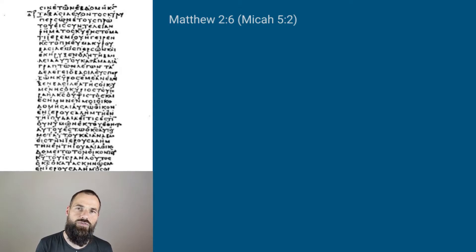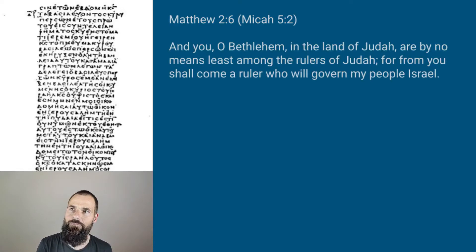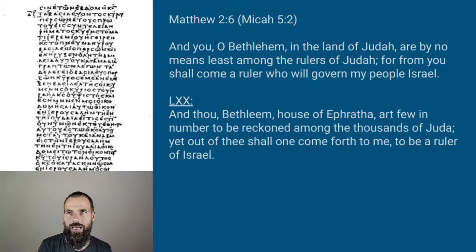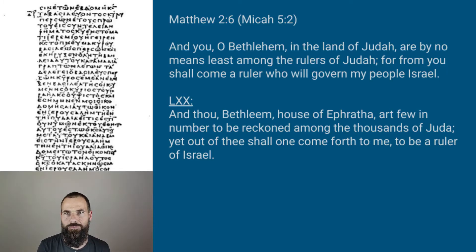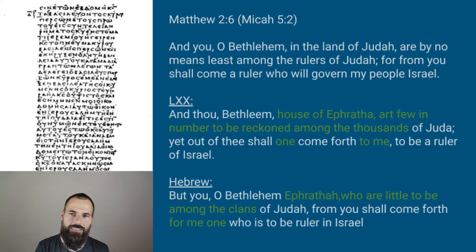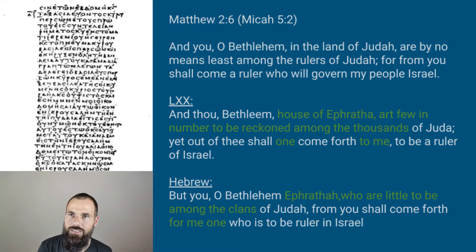Let's look at an example from Matthew 2:6, where Matthew undoubtedly quotes Micah 5:2. He says: 'And you, O Bethlehem, in the land of Judah, are by no means least among the rulers of Judah; for from you shall come a ruler who will govern my people Israel.' The Septuagint, however, says: 'And though Bethlehem, house of Ephratah, art few in number to be reckoned among the thousands of Judah, yet out of thee shall one come forth to me to be a ruler of Israel.' The Hebrew text says: 'But you, O Bethlehem Ephratah, who are little to be among the clans of Judah, from you shall come forth for me one who is to be ruler in Israel.' There are a number of differences — Judah versus Ephratah in both the Hebrew and Septuagint — and many other differences visible on screen.